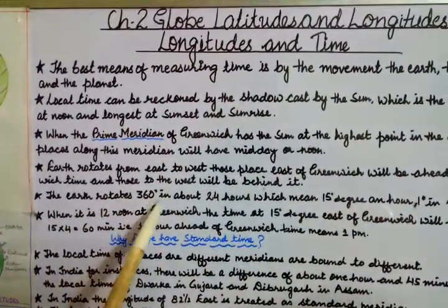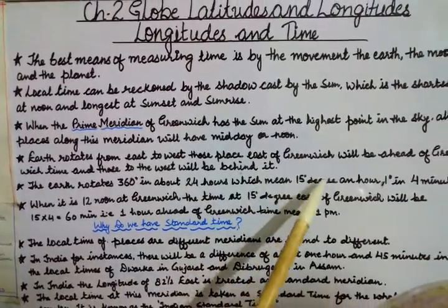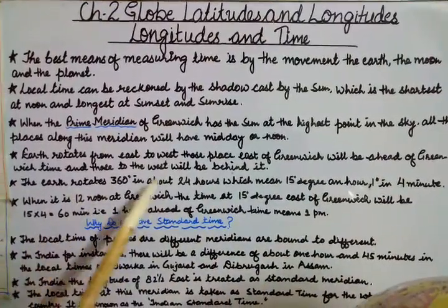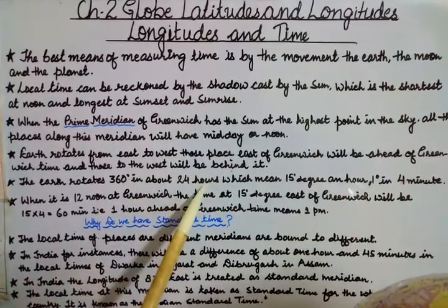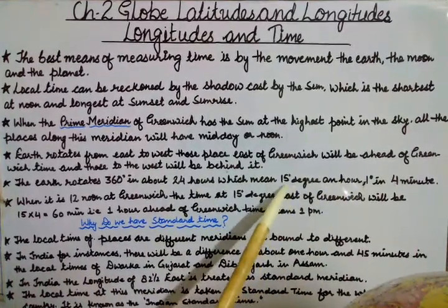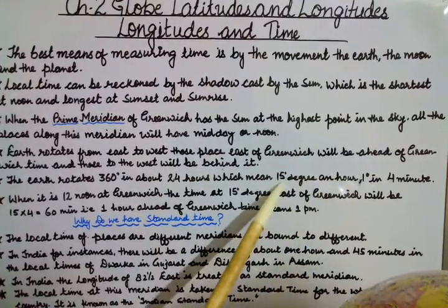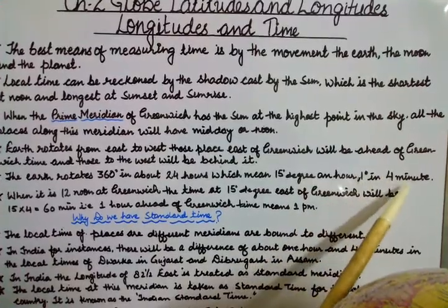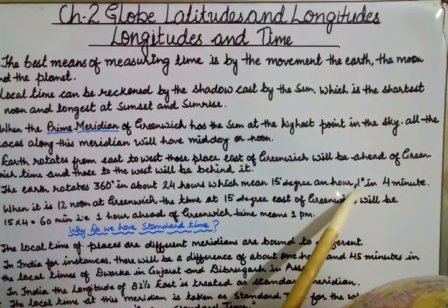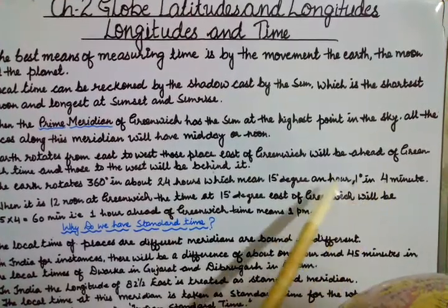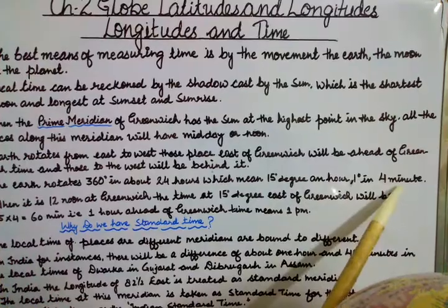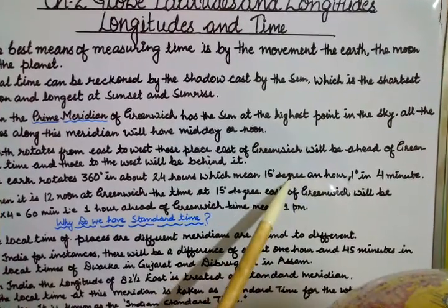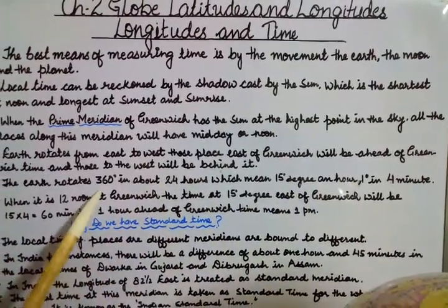The earth rotates 360 degrees in about 24 hours, which means 15 degrees per hour, and 1 degree in 4 minutes. Our earth covers 15 degrees in 1 hour. If we divide further: 1 degree is covered in 4 minutes. So 4 into 15 equals 60 minutes, meaning 1 hour — confirming 15 degrees per hour and 360 degrees in 24 hours.